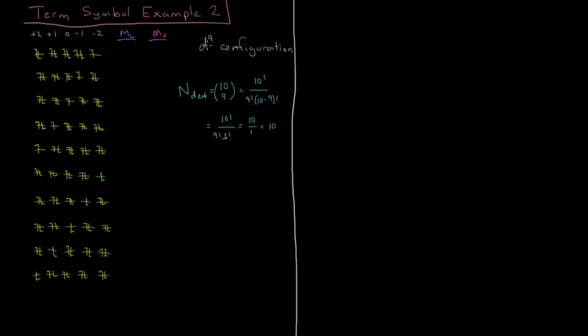This makes sense because D9 gives the same term symbols as D1. Instead of a single electron in each spin orbital, we have a single absence of an electron. You'll see that D1 and D9 give the same term symbols, same thing for P0 and P6, P1 and P5, P2 and P4.